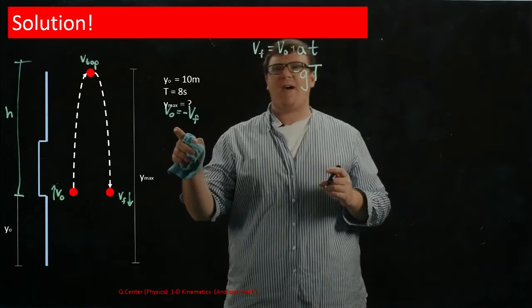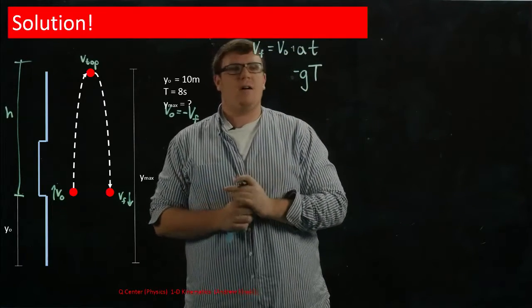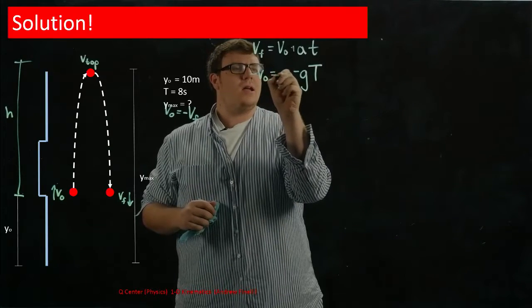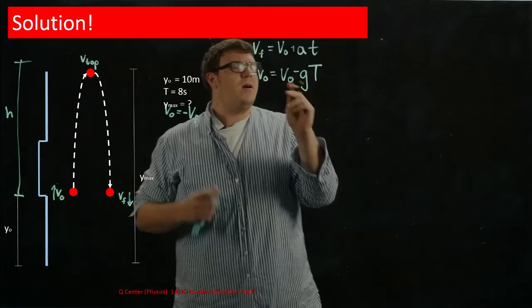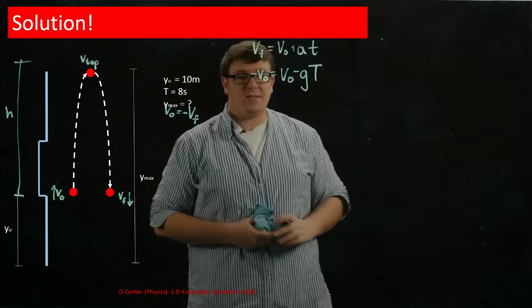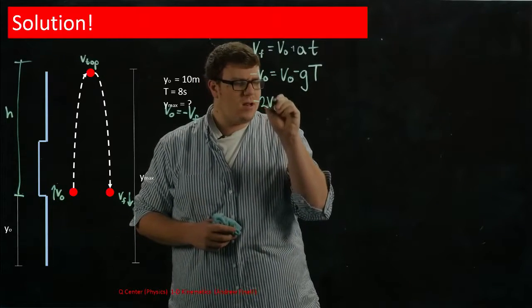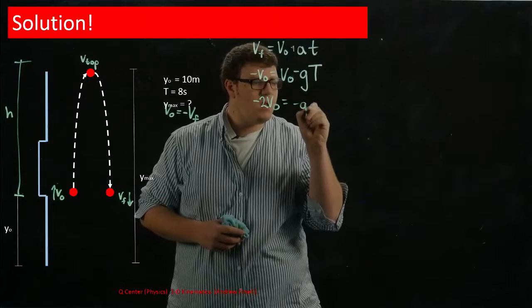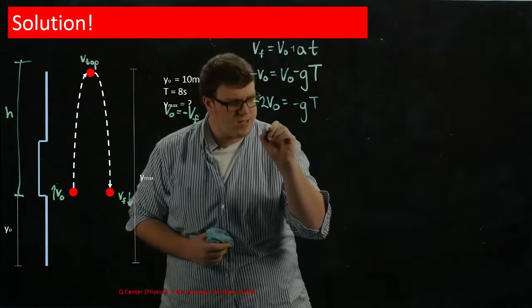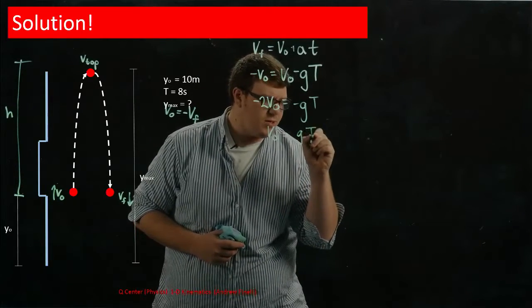So I can use this. I can exploit this fact here and write this just in terms of v zero. So I can write this as negative v zero equals v zero minus gt. And then I can solve this for v zero. So I'm going to do that very quickly. So I'm going to get this guy. And then if I solve for v zero, I get that v zero is equal to gt over 2.